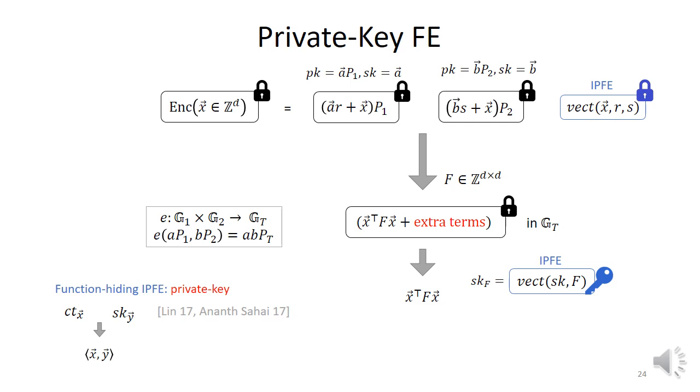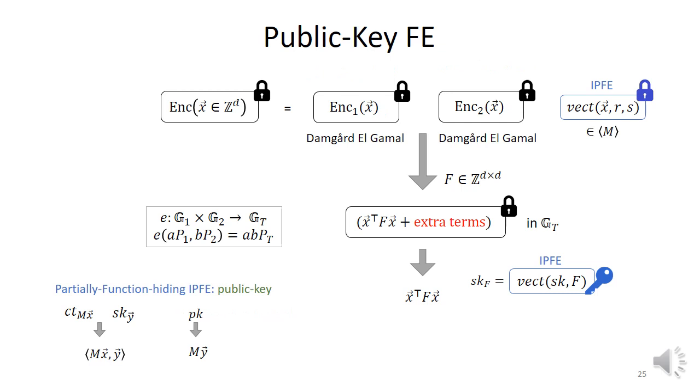So the main technical challenge we solve is, how do we get around this? How do we make the scheme public key? So the idea is, we'll use some function hiding, but not completely. Our scheme will actually be partially hiding the functions. And this is possible because we only care about generating ciphertext for vectors that lie in a span of a particular matrix M. That means a public key will automatically reveal M times Y. This is necessary, but nothing else beyond that information. And this part of Y that is hidden will be sufficient to hide these extra terms and to hide the message. That will be sufficient for us to prove security on the overall scheme.